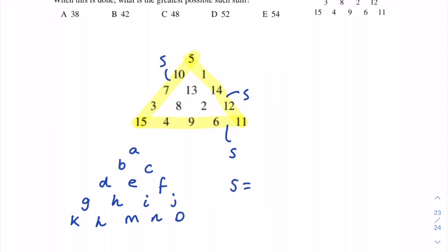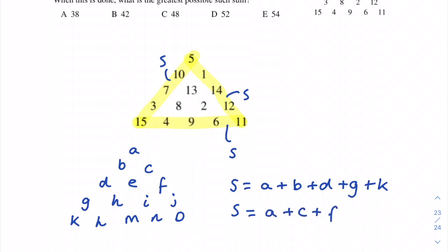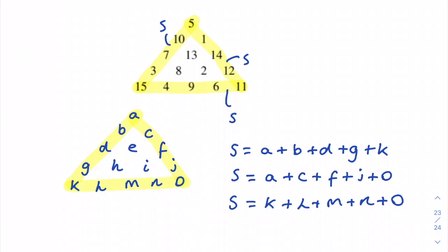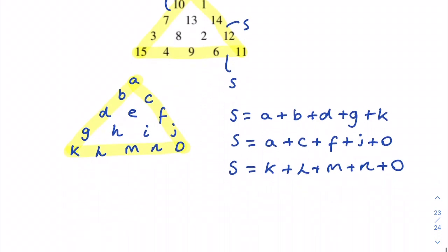Using the triangle, we write three equations: S = a + b + d + g + k (left edge), S = a + c + f + j + o (right edge), and S = k + l + m + n + o (bottom edge). We can also find the total sum of all numbers a to o.